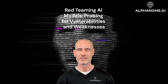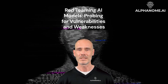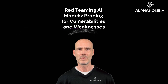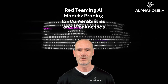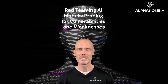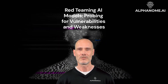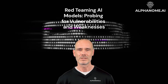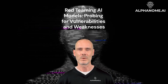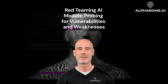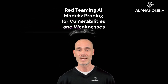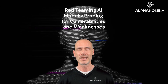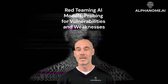Red Teaming AI Models: Probing for Vulnerabilities and Weaknesses. As artificial intelligence systems become more advanced and prevalent, it is crucial to rigorously test and evaluate their robustness and security. One powerful technique for doing this is called Red Teaming, an adversarial approach that probes an AI system's defenses by simulating real-world attacks and exploitation attempts. Just as human red teams test physical and cyber defenses, AI Red Teaming aims to find vulnerabilities and blind spots in AI models before they can be exploited by bad actors.